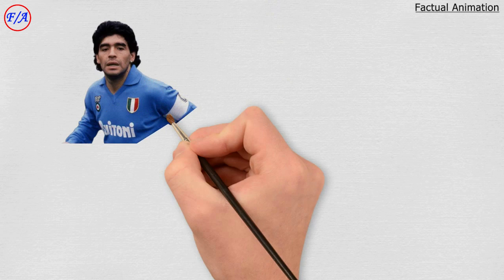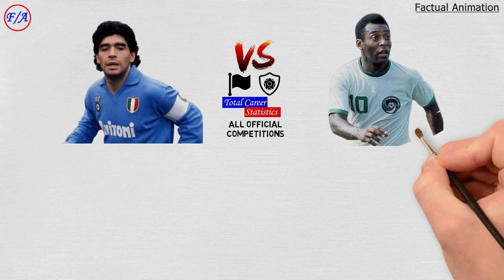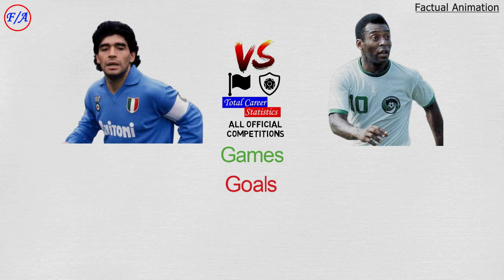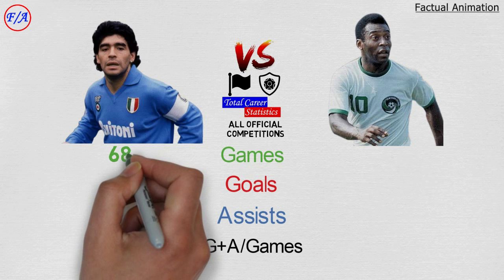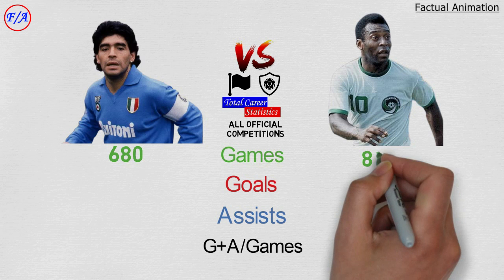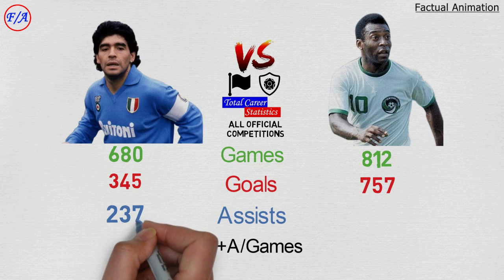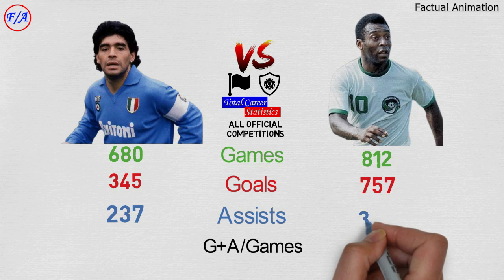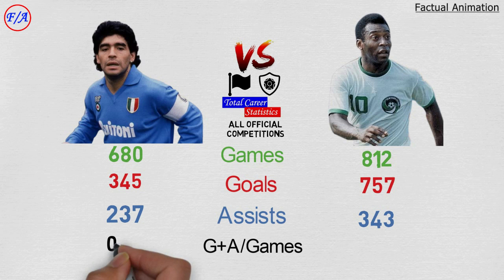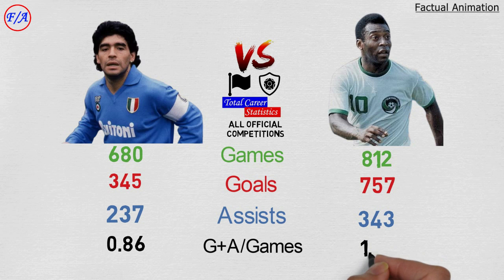Looking at total career statistics for both club and country in all competitions: Maradona played 680 games total, scored 345 goals, and provided 237 assists — 0.86 goal contributions per game. Pelé played 812 official games, scored 757 goals, and provided 343 assists — 1.35 goal contributions per game.